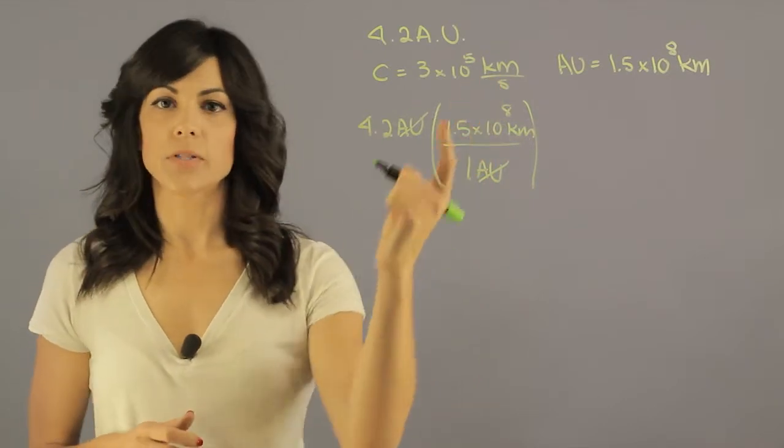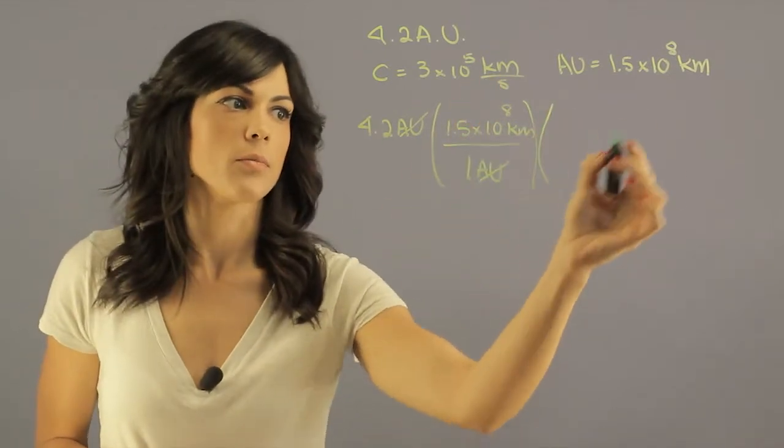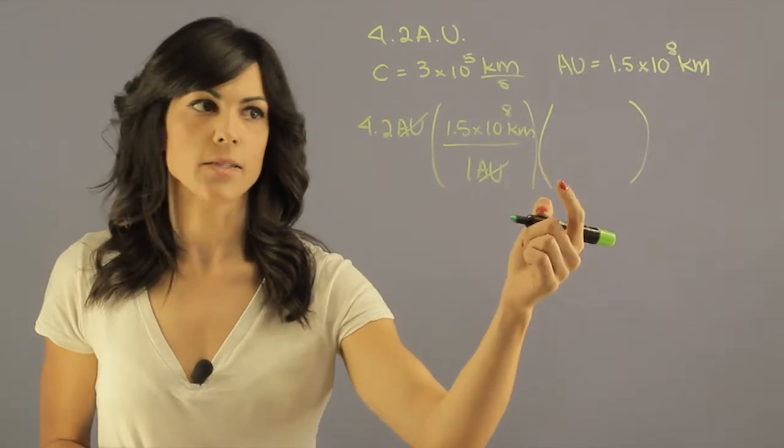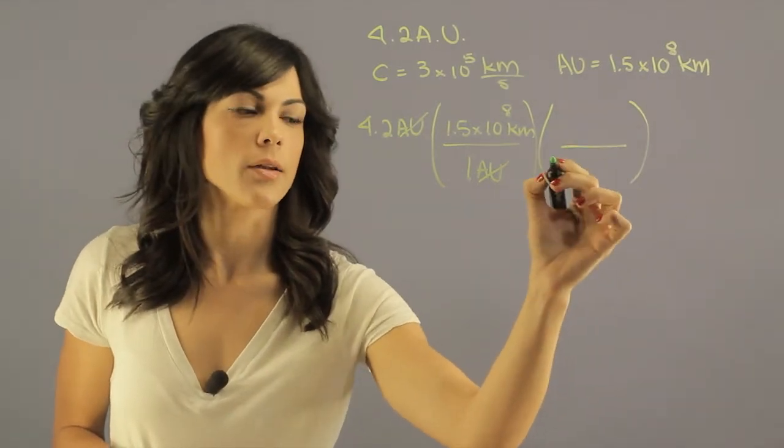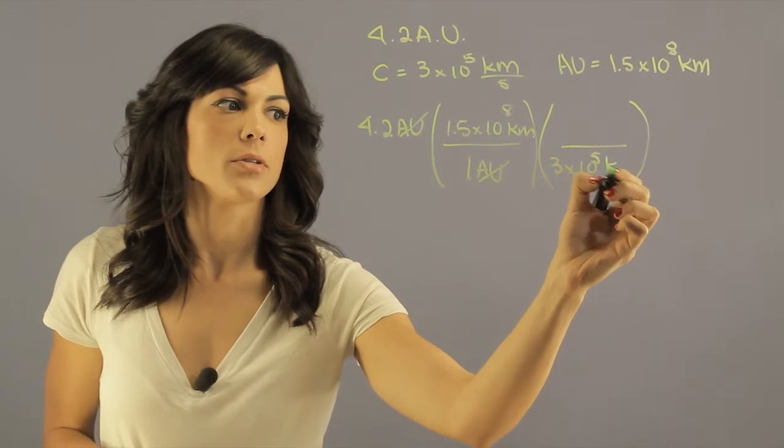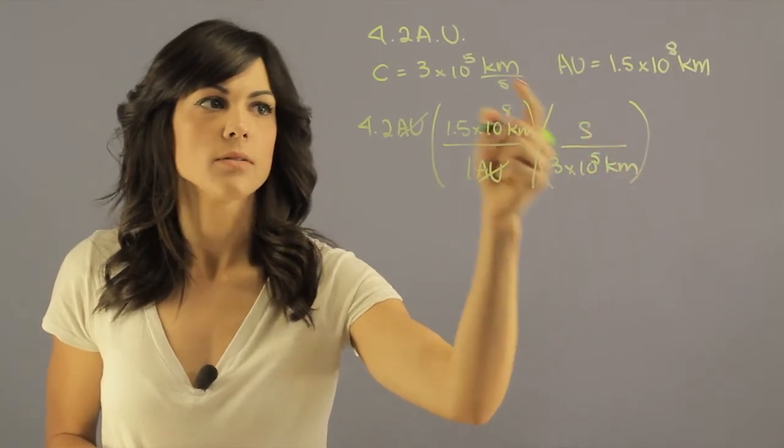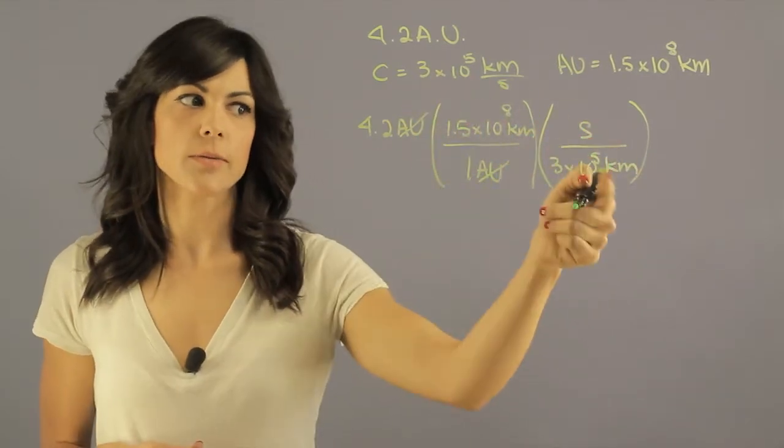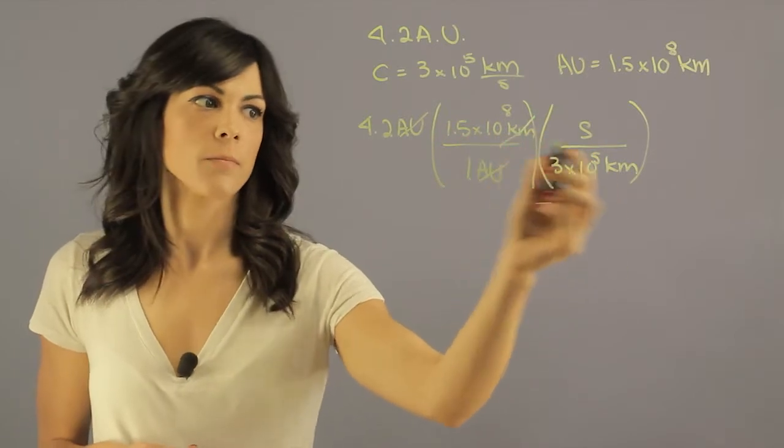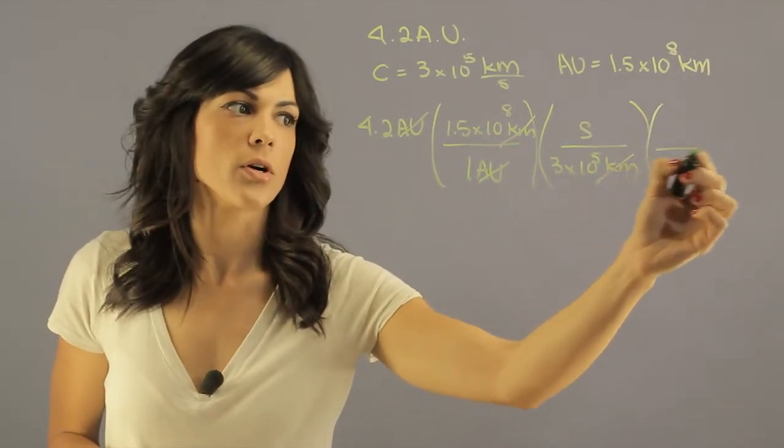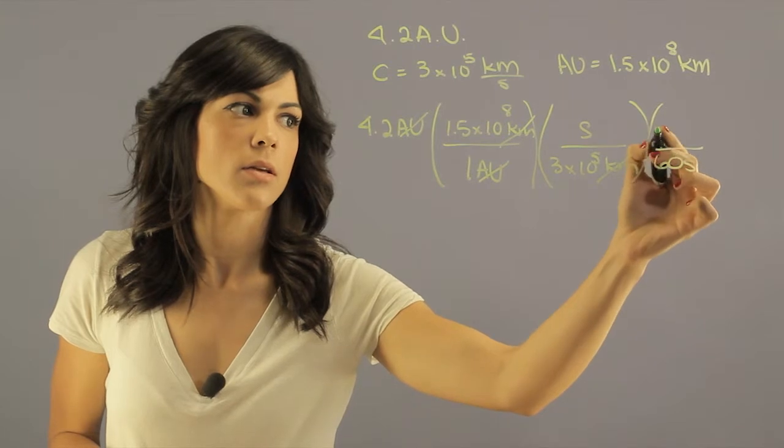Now let's put kilometers into seconds. So here we'll insert light speed. So we know that 3 times 10 to the 5th kilometers per second and this is light speed just flipped to match the units. And then we know that there are 60 seconds in one minute.